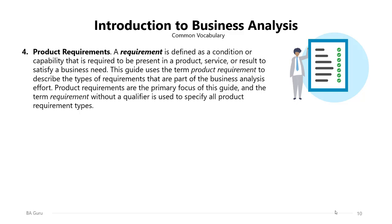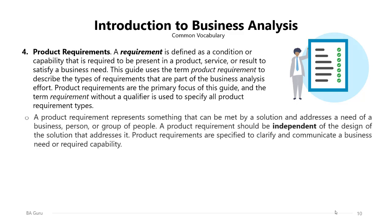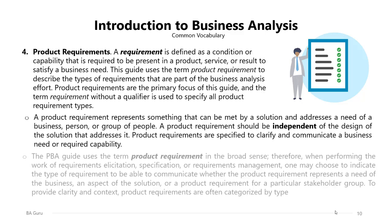In this lecture, I will be covering the four main types of product requirements. A product requirement represents something that can be met by a solution and addresses a need of a business person or group of people. A product requirement should be independent of the design of the solution. Product requirements are specified to clarify and communicate a business need or required capabilities for the organization or its key stakeholders.